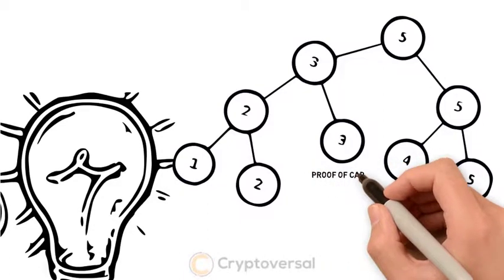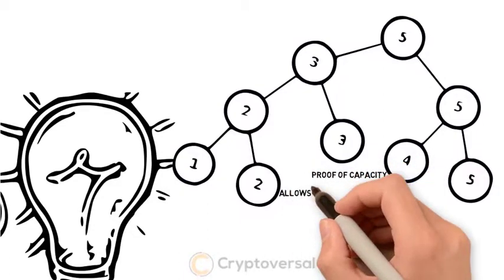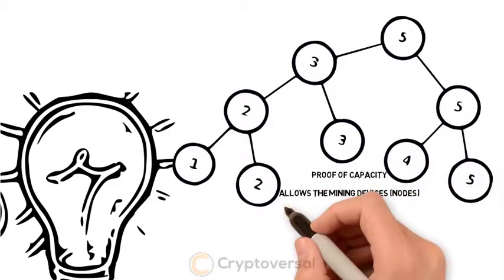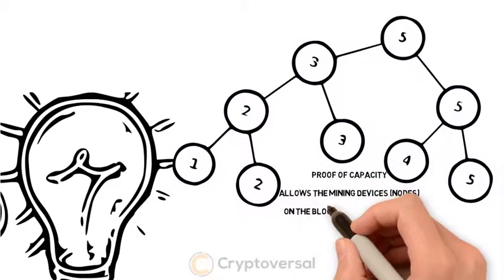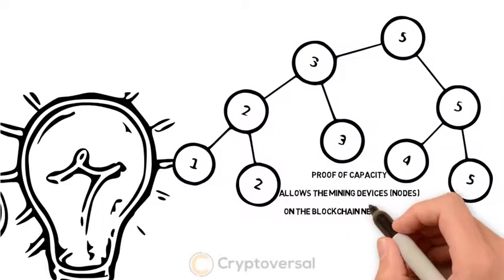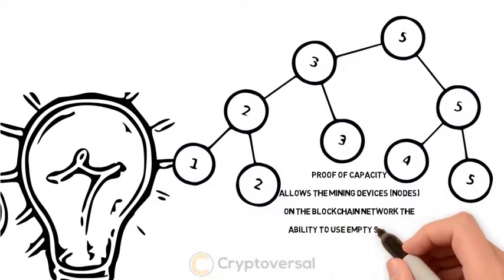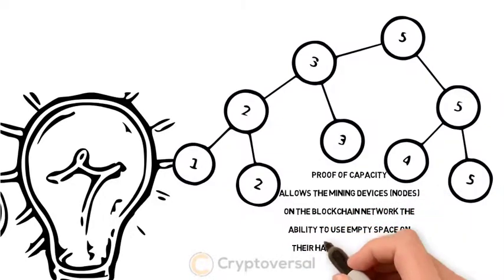Proof of Capacity allows the mining devices on the blockchain network the ability to use empty space on their hard drive to mine the available crypto coins.